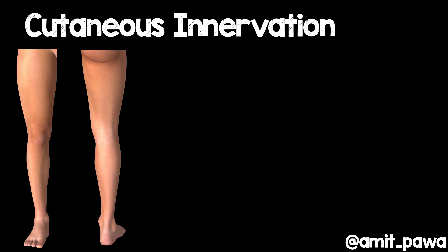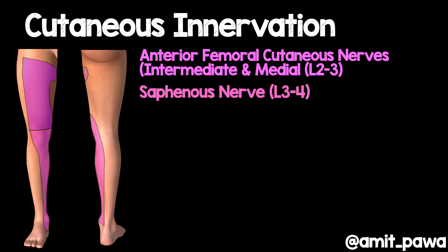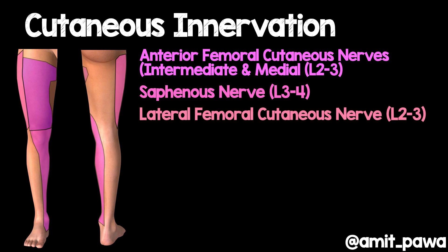Let's start with cutaneous innervation. The anterior femoral cutaneous nerves have intermediate and medial branches, and they innervate a large part of the anterior surface of the knee — exactly where incisions are made for knee arthroplasty. We can overlay the saphenous nerve, which is a target of the femoral triangle or adductor canal blocks, and also add in the lateral femoral cutaneous nerve, which is perhaps less important for knee arthroplasty.